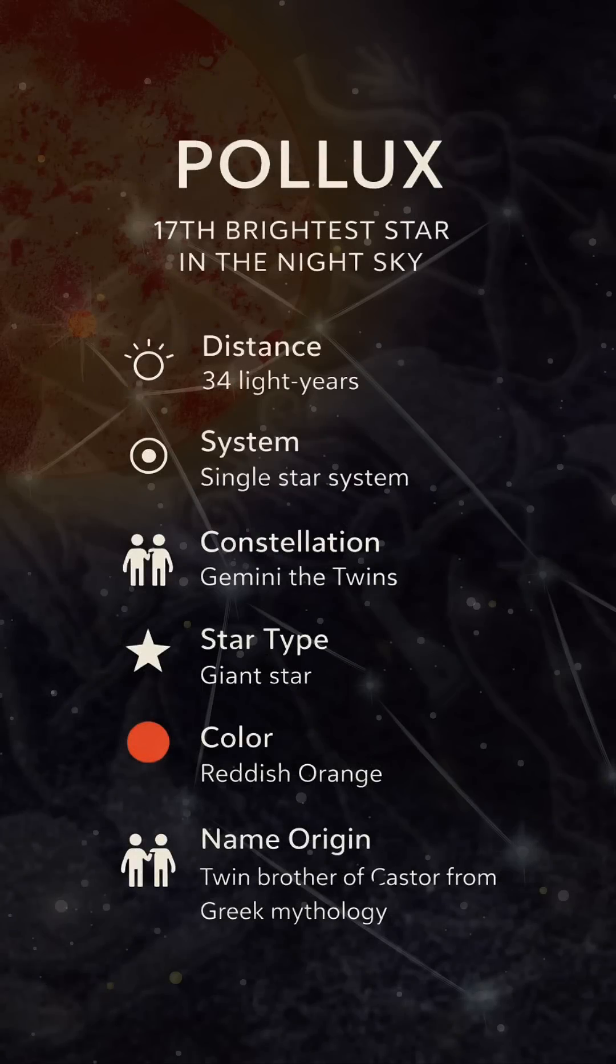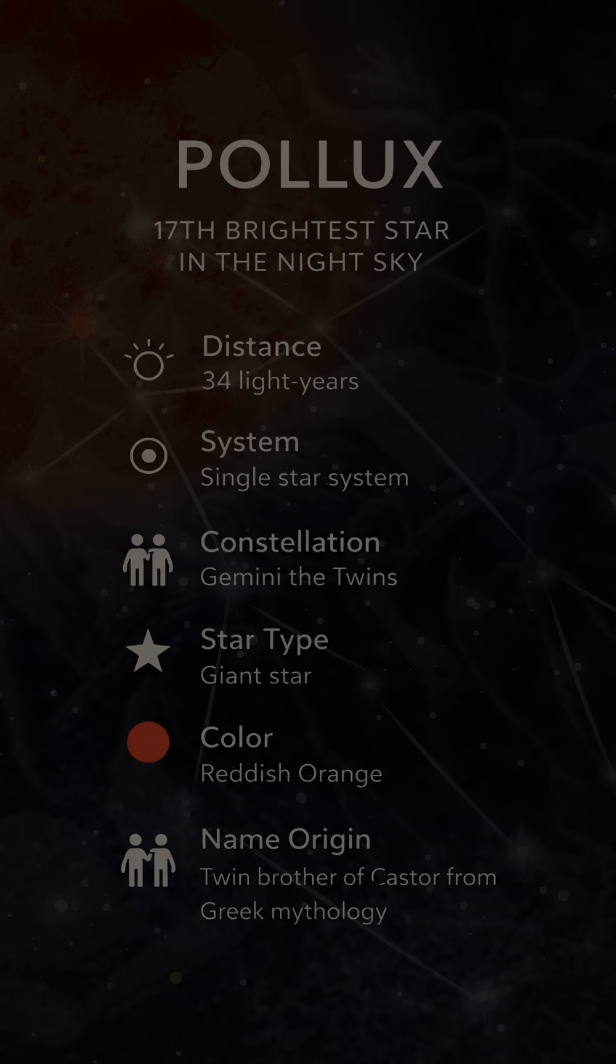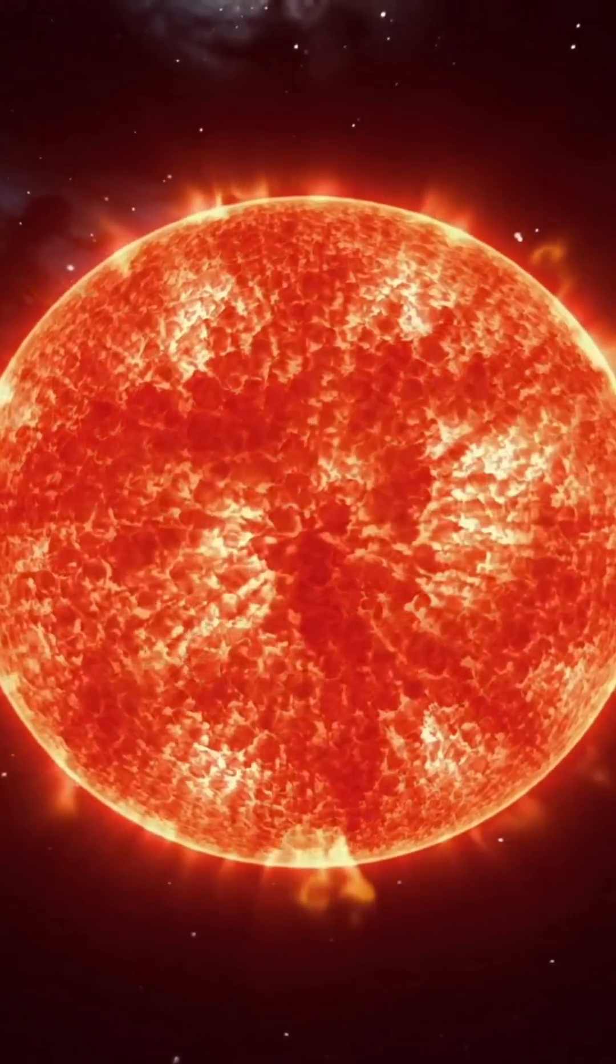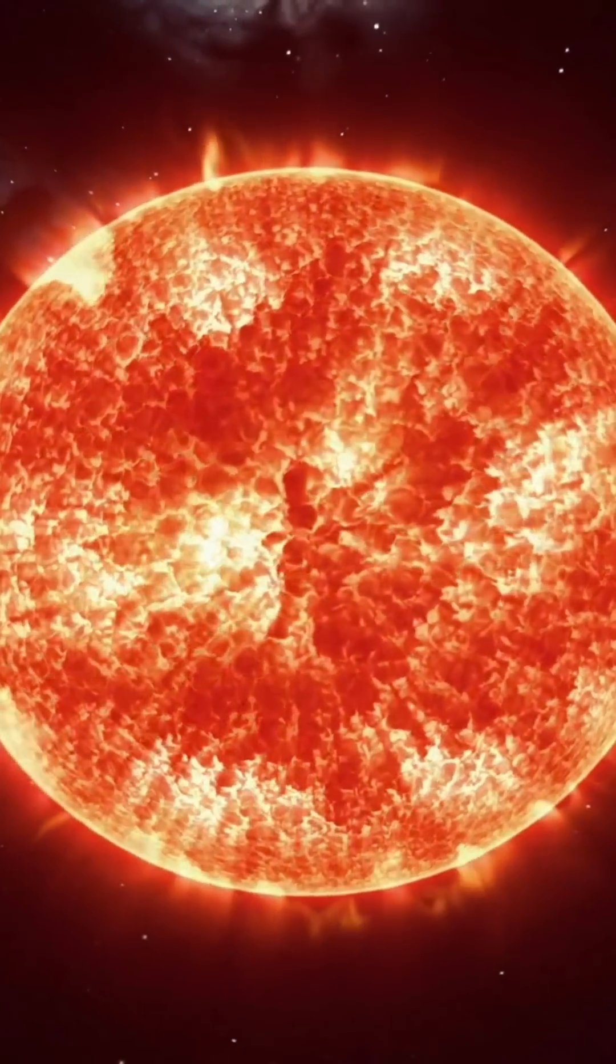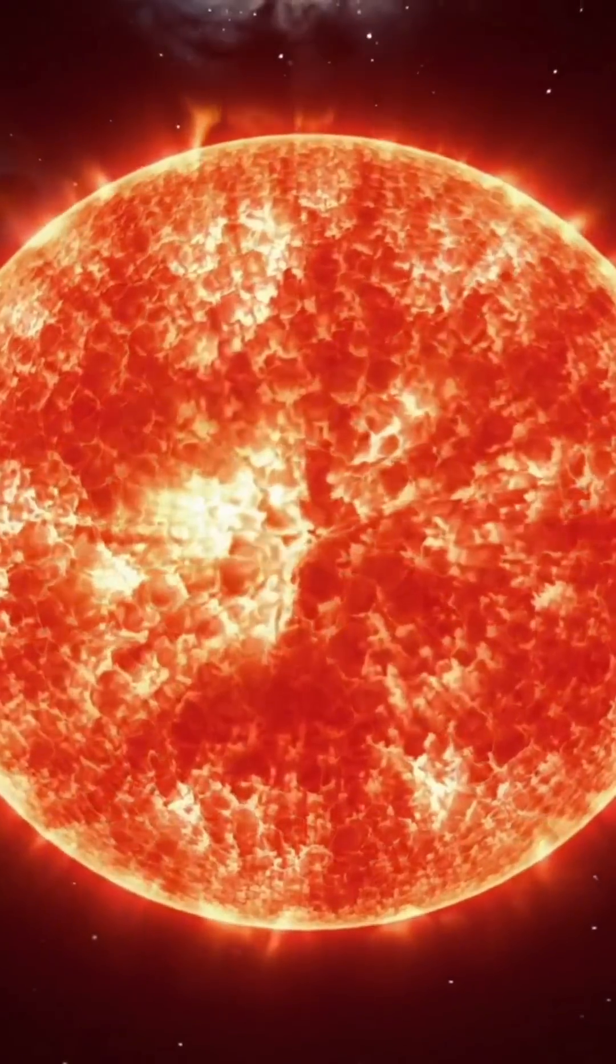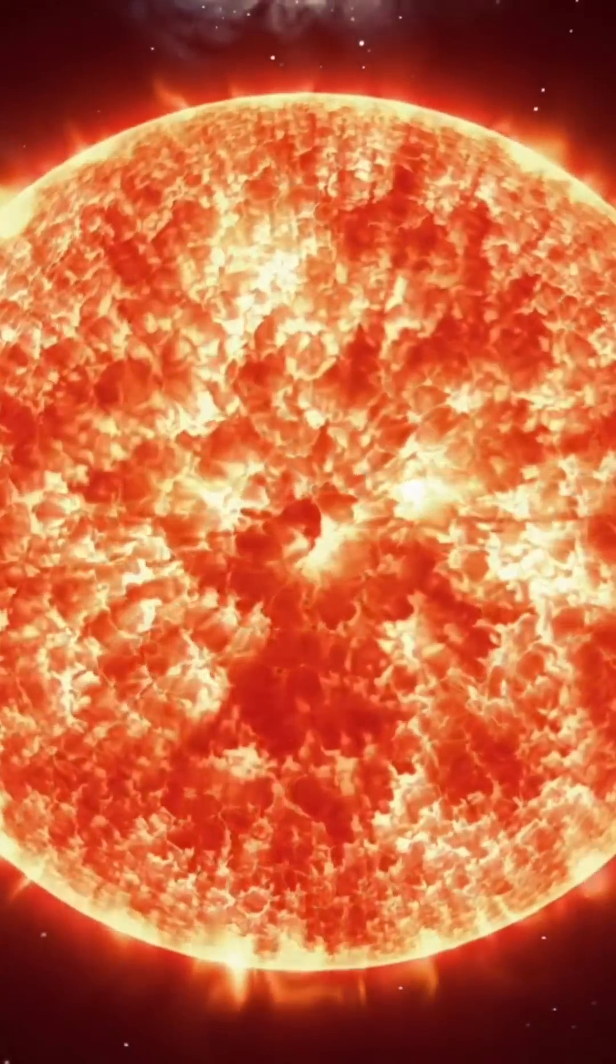Pollux is classified as a giant star, one that has already expanded and brightened after exhausting the hydrogen in its core. It's larger and more luminous than the sun, and its warm orange-yellow hue is a hallmark of its cooler surface temperature.